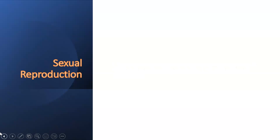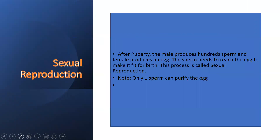Now we need to learn what sexual reproduction is. After puberty, the male produces hundreds of sperms and the female produces an egg inside the body. The sperm needs to reach the egg to make it fit for birth — or purify it. This process is called sexual reproduction. Note: only one sperm can purify the egg, and the rest of the hundreds of sperms go to waste.